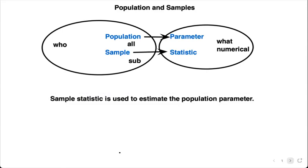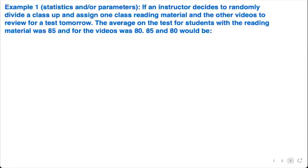Let's go over two examples. Here's the first one: if an instructor decides to randomly divide a class up and assign one class reading material and the other videos to review for a test tomorrow, the average on the test for students with the reading material was 85 and for the videos was 80. In this case, both 85 and 80 are statistics because they came from samples of students.